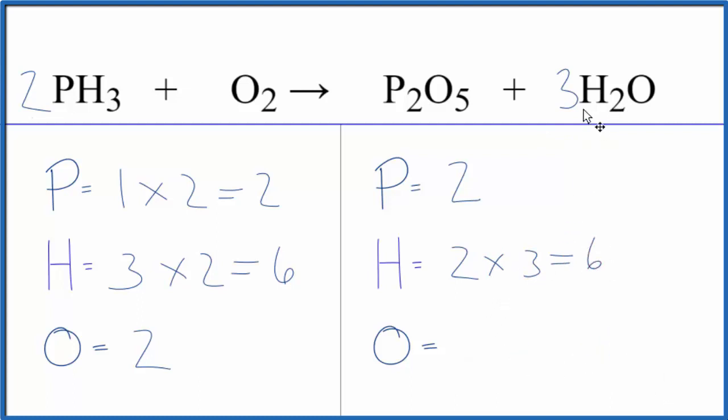So I have 5 here plus 3 times the 1, so that's 3. It gives me 8 oxygen atoms, which is kind of nice because since I have an even number here and oxygen's all by itself, if I put a 4 as the coefficient, 2 times 4, that'll give me 8.